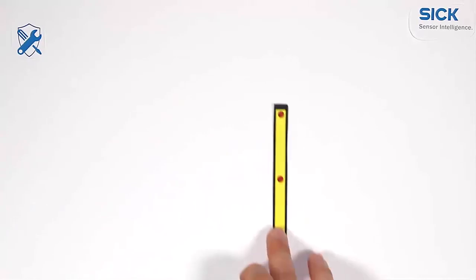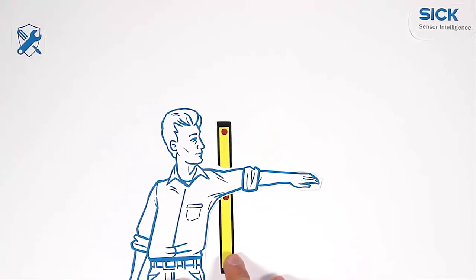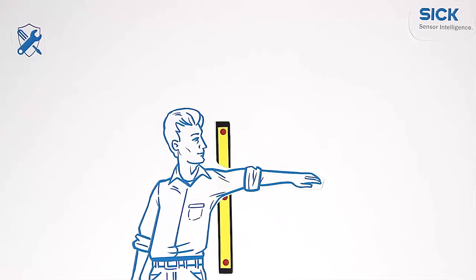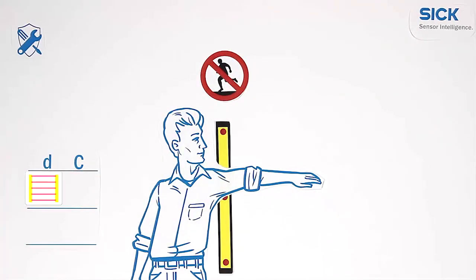Using a multi-beam system, a whole arm can reach through the light beams. Only bodies can be detected. For that reason, C is significantly larger, 850 mm.